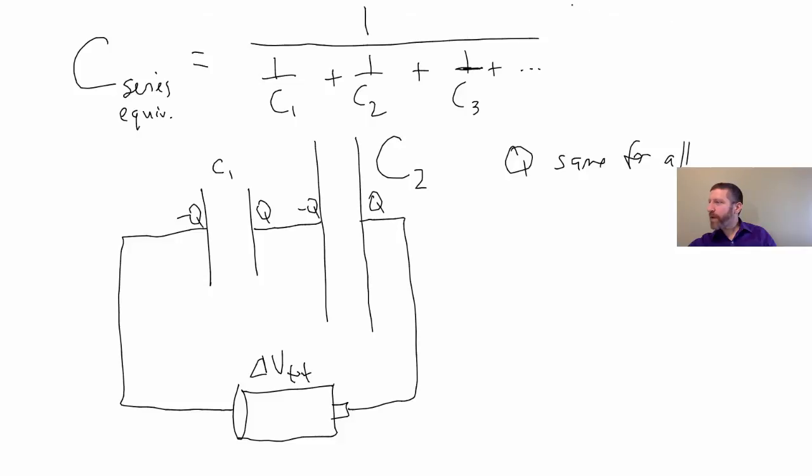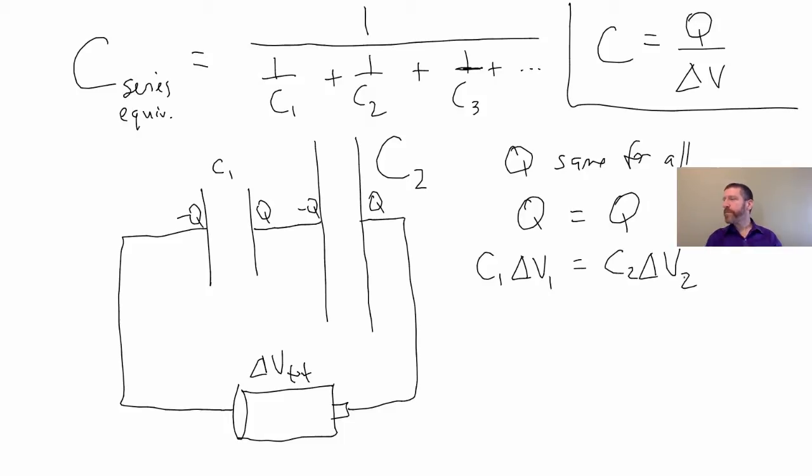So what does that mean about the voltage drop across each one? Because Q = CV. We keep coming back to that. Q = CV. Here it is. Q equals Q. That will be equal to C1 times delta V1, and that'll also be C2 times delta V2.